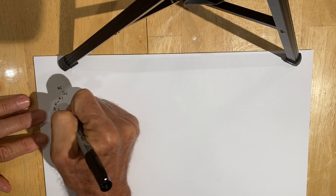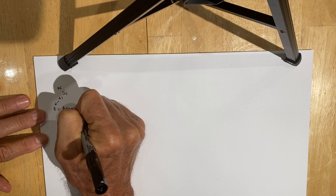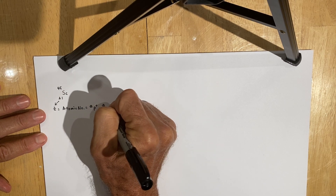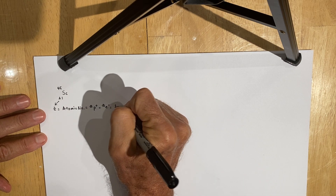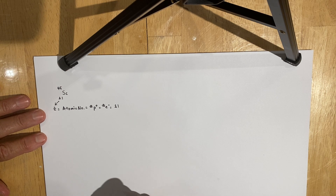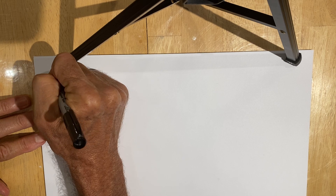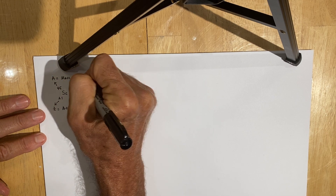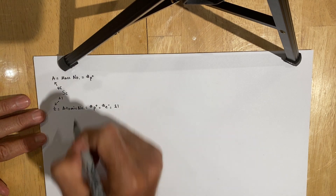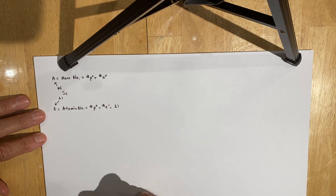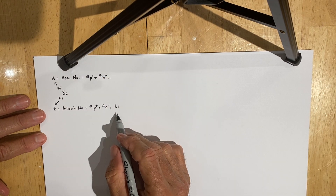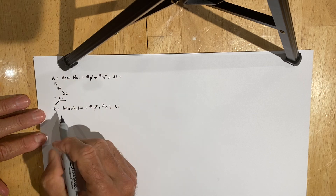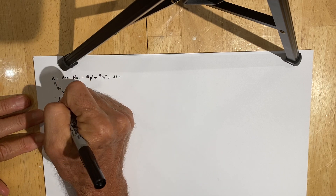The atomic number, 21, is the Z-value, which represents the atomic number for scandium. This is equal to the number of protons, and also equal to the number of electrons, which in this case is 21. On a neutral atom, the number of protons and electrons should be equal. The mass number, 45, is equal to the sum of the positively charged protons plus the neutral neutrons. We know scandium has 21 protons, and the number of neutrons is determined by subtracting the atomic number from the mass number, giving us 24.